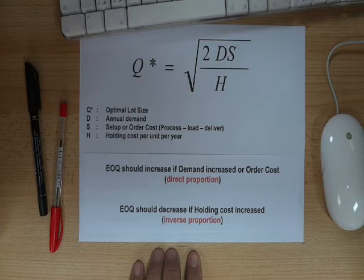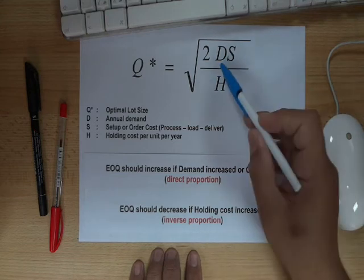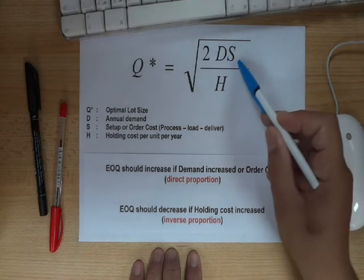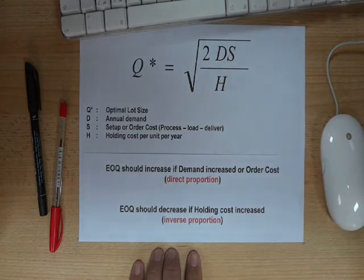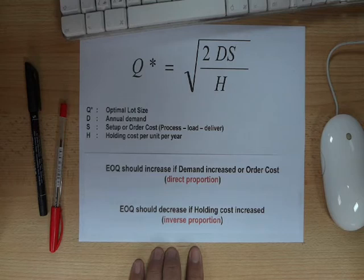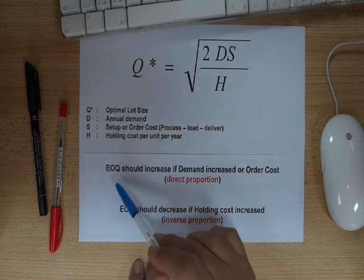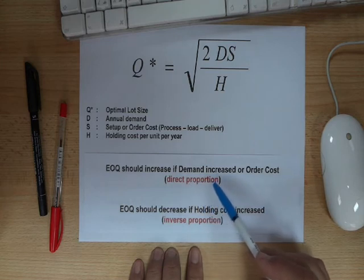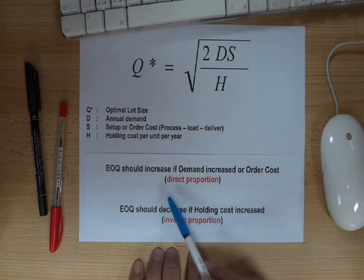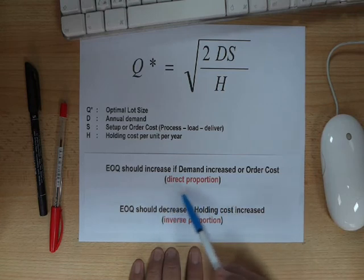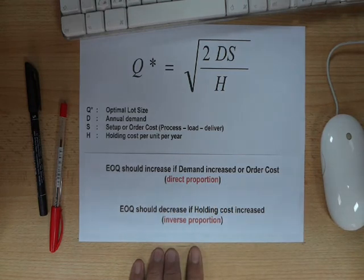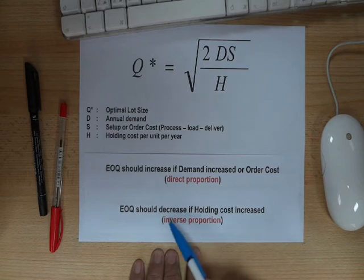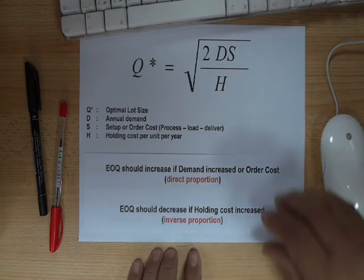It's a very simple and straightforward formula. If we look carefully at the equation, we can conclude some general rules. Economic order quantity should increase if demand increases or order cost increases — that is a direct proportion. Economic order quantity should decrease if holding cost increases — that is an inverse proportion.